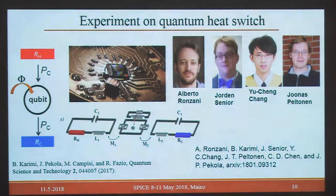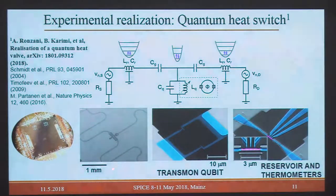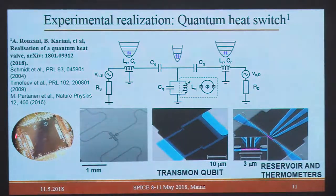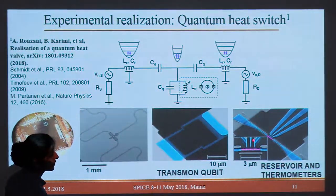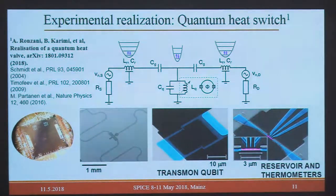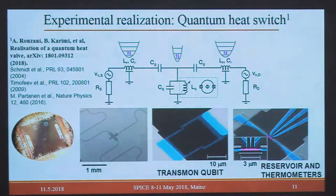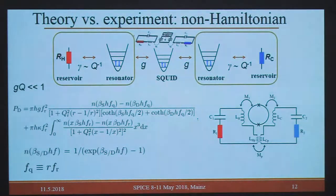For the heat switch, two identical resonators are used — the next step is to make them different and use the system as a refrigerator. This is the circuit: a transmon-type qubit in the middle with two identical coplanar waveguide resonators. There is a SQUID shunted by two resistances. We use an SNS junction and NIS thermometer to measure. We apply heat on one side and then measure the heat current from the other side.